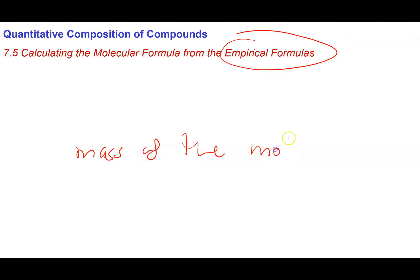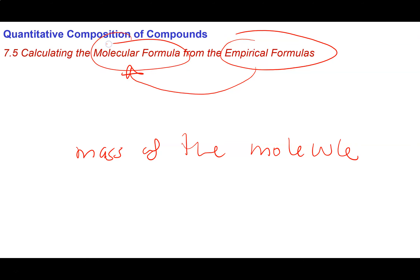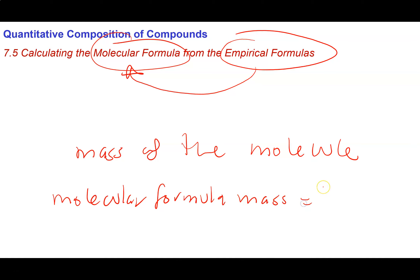If we have the mass of one molecule, it turns out that we can take an empirical formula and turn it into a molecular formula. The key idea is that the molecular formula mass is always equal to a whole number times the empirical formula mass. Our job is just to figure out what that whole number multiplier is.